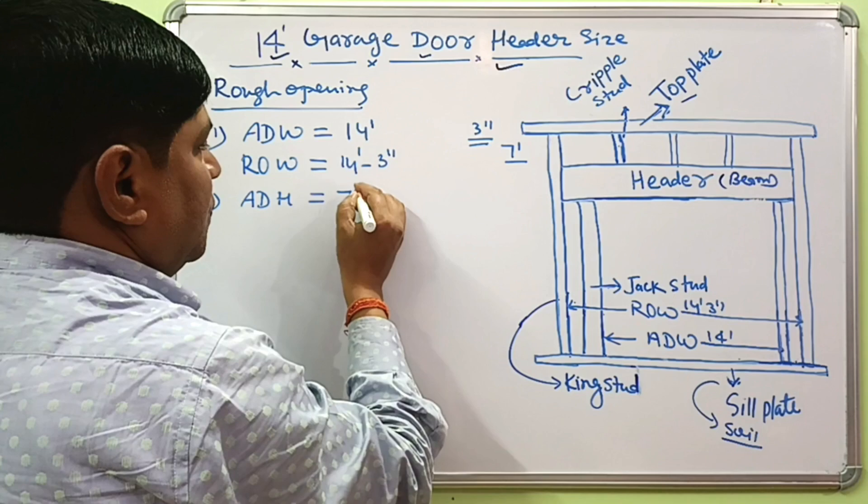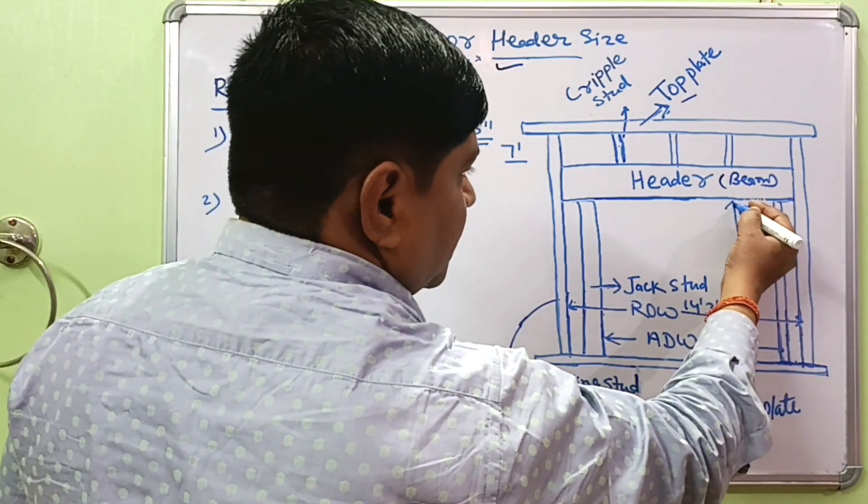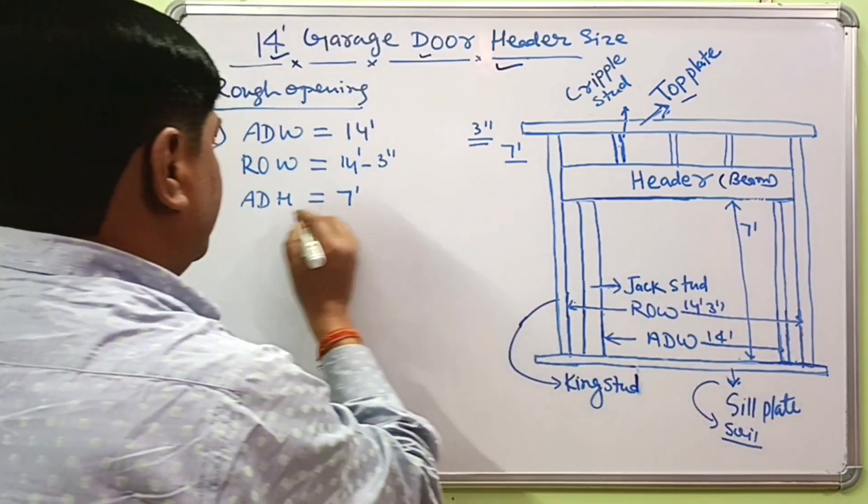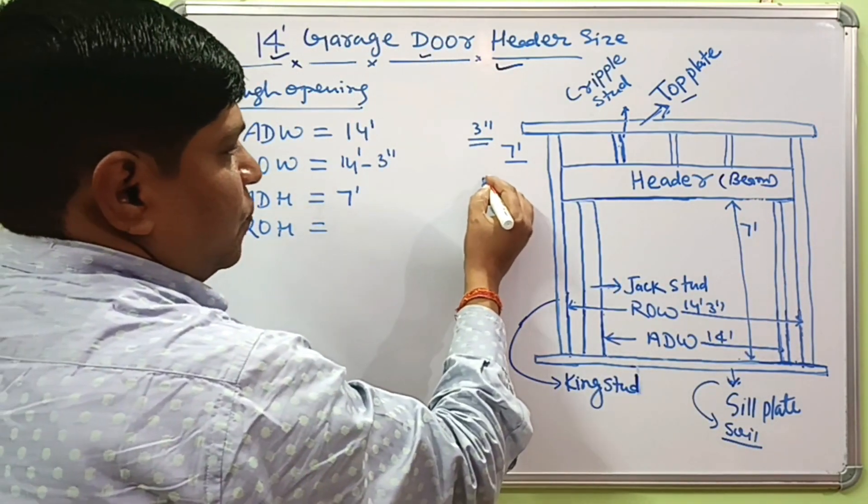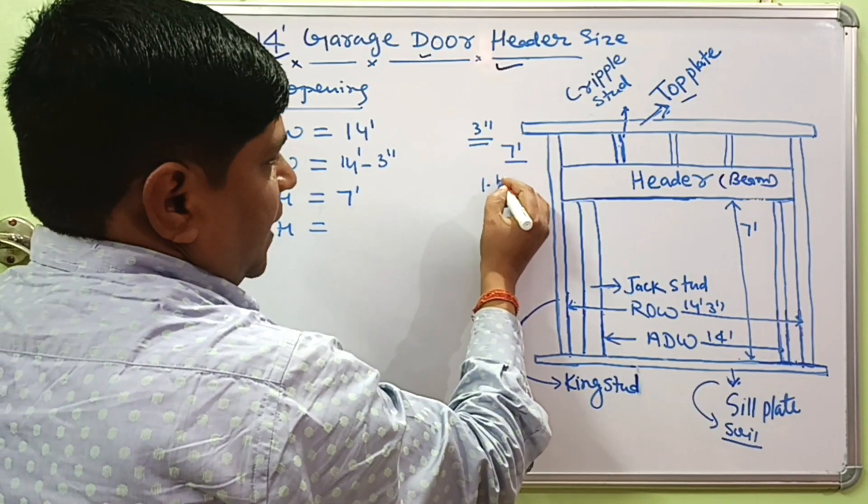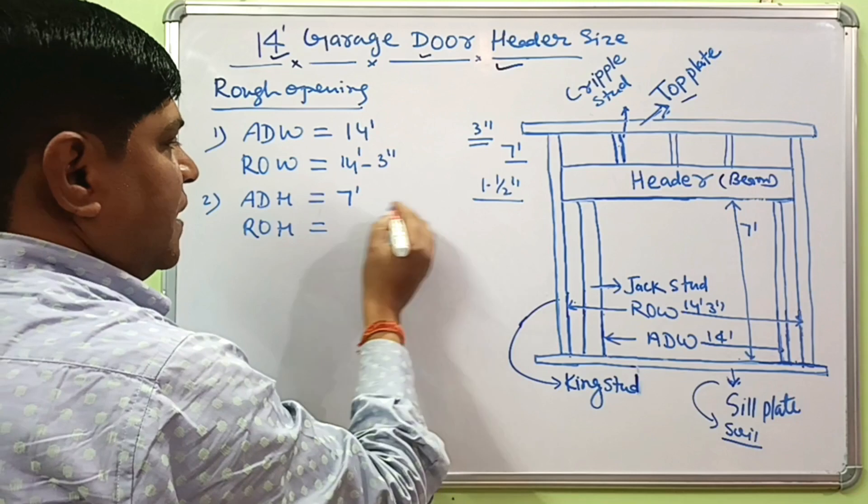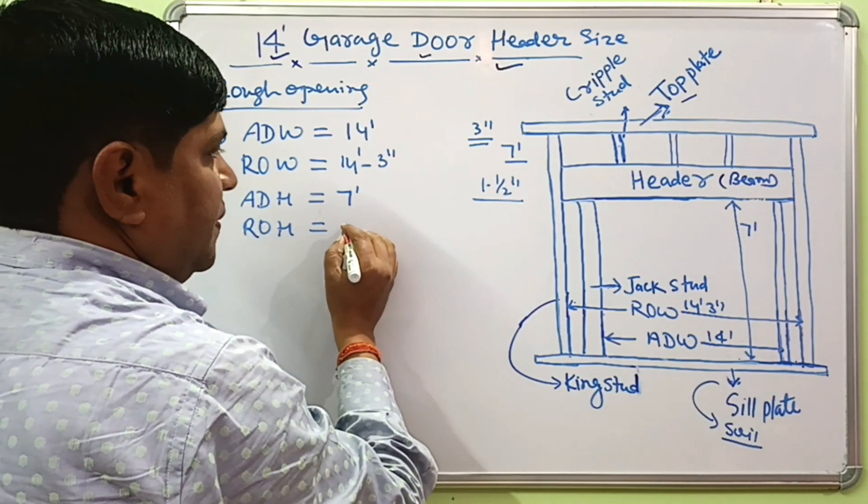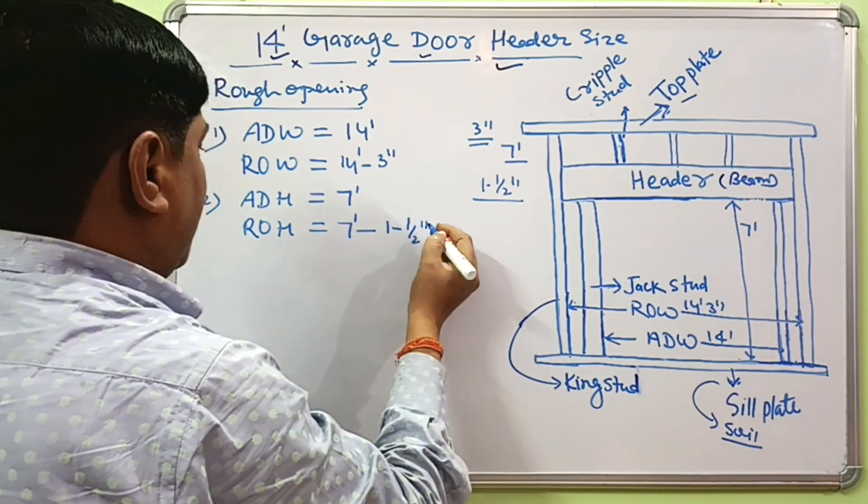If the actual door height is 7 feet, the rough opening height will be about 1 and 1/2 inches higher than the actual door height. That's why the rough opening height will be 7 feet 1 and 1/2 inches.